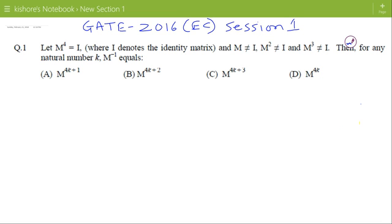Then for any natural number K, M inverse is... and these are the four options. So M to the power 4 is identity matrix, so M times M cubed is identity matrix, therefore M cubed is M inverse.